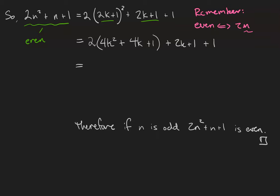Then we distribute our 2, so we get 8k squared, plus 8k, plus 2, plus 2k, plus 1, plus 1. And this collapses to 8k squared, plus 10k, plus 4.